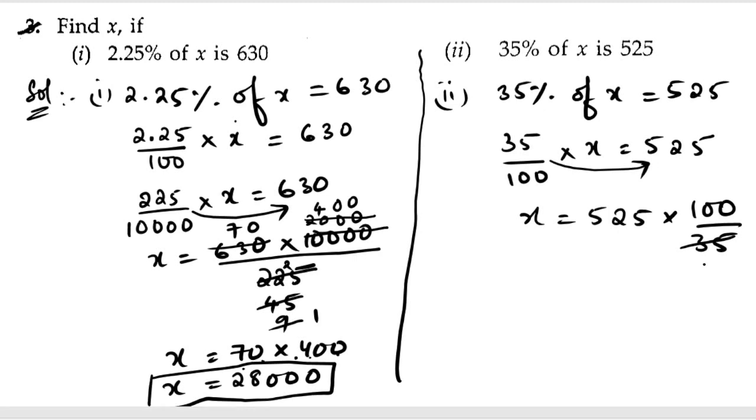5 sevens are 5, twos are 10, 0. 7 ones are 7, sevens are 49. So 3 left, 7 fives are 35. So x equals 75 times 20.